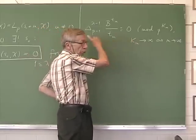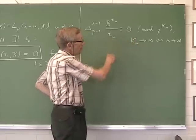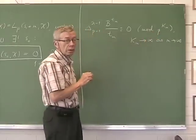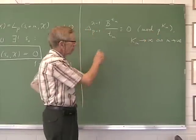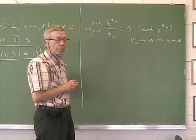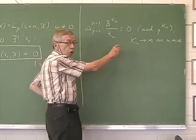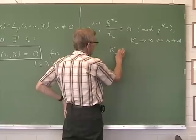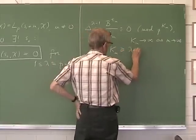This is true anyway with the exponent lambda minus 1 only, so that this result is much stronger. And I can show explicitly that kn is at least lambda plus n.